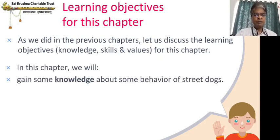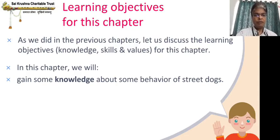In this chapter, we will gain some knowledge about the behavior of street dogs. Knowledge means something which we don't know, we are going to learn — it is information which is already existing. The behavior of street dogs is already existing; everybody knows about it, but not everybody knows how they behave. So we are going to gain some more knowledge about street dogs in this chapter.